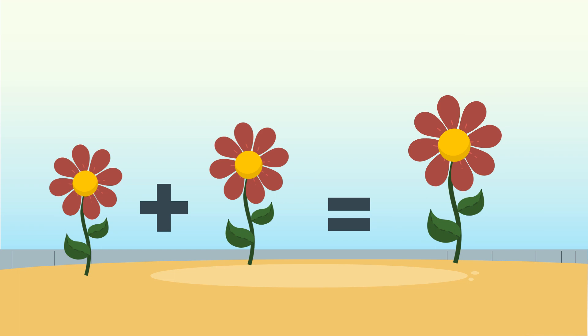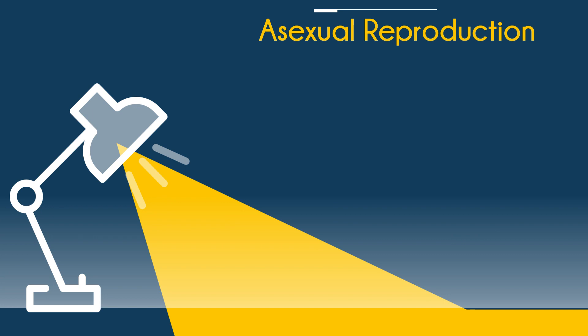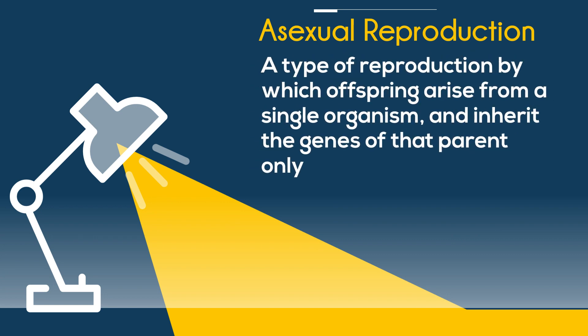Next, we have asexual reproduction — a type of reproduction by which offspring arise from a single organism and inherit the genes of that parent.